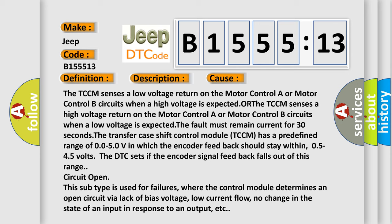The TCCM senses a low voltage return on the motor control A or motor control B circuits when a high voltage is expected. The fault must remain current for 30 seconds. The transfer case shift control module TCCM has a predefined range of 0.050V in which the encoder feedback should stay within 0.5 to 4.5 volts. The DTC sets if the encoder signal feedback falls out of this range circuit open.